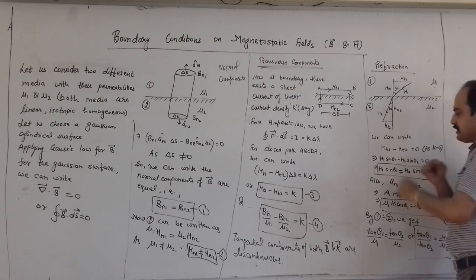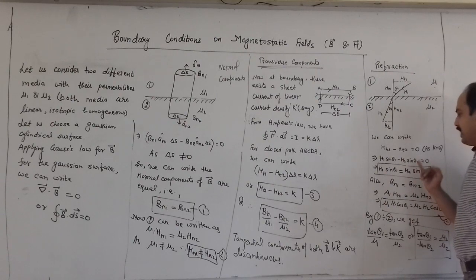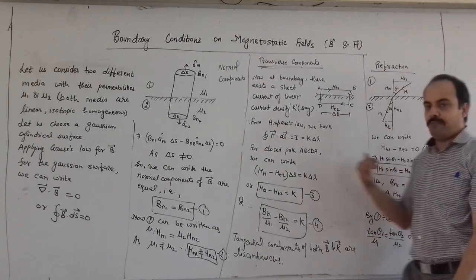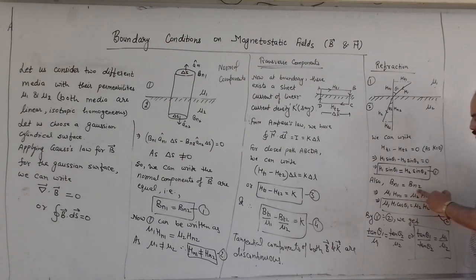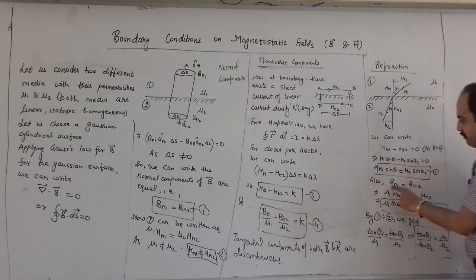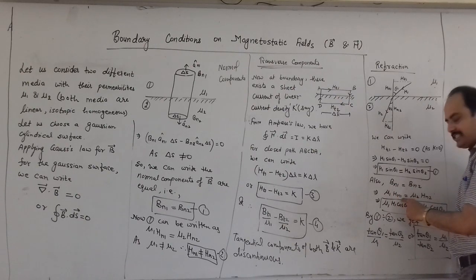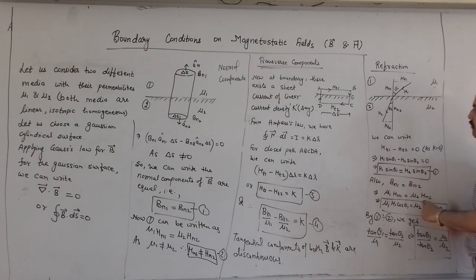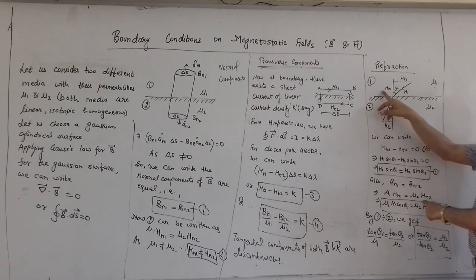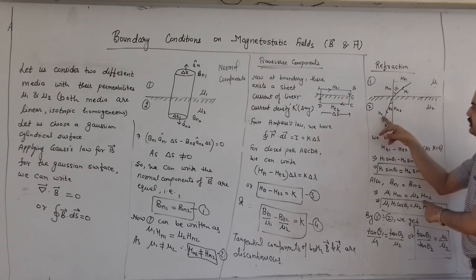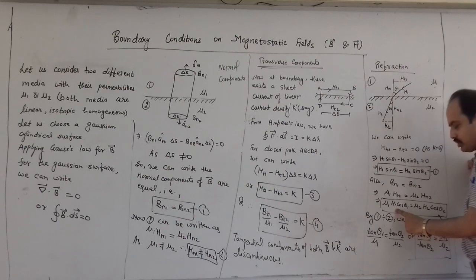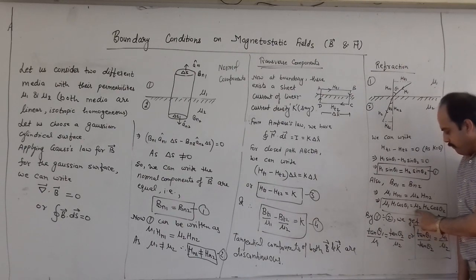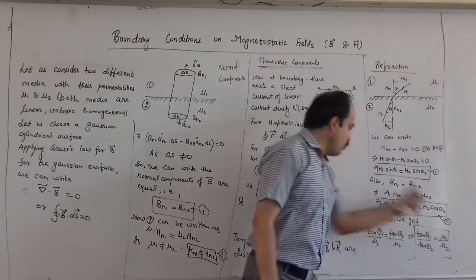We can write in terms of H using the normal component condition: mu1 times HN1 equals mu2 times HN2. From the figure, HN1 equals H1 cos theta 1, and HN2 equals H2 cos theta 2. So we write mu1 times H1 cos theta 1 equals mu2 times H2 cos theta 2. This is equation number 2.